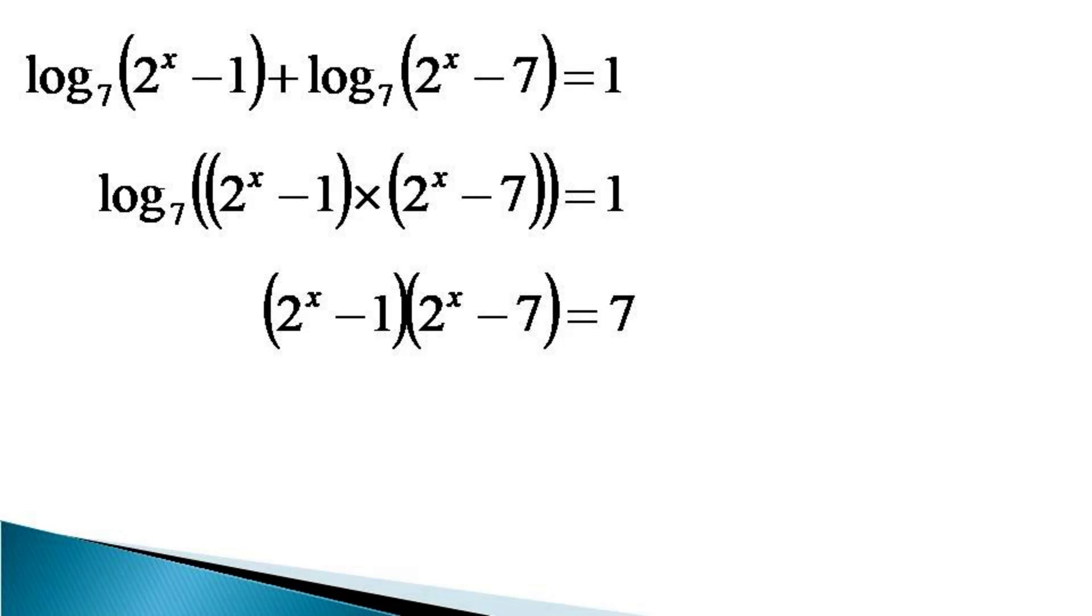And expanding the left hand side, we get the equation as 2^(2x) - 8 × 2^x + 7 is equal to 7. This simplifies to 2^(2x) - 8 × 2^x is equal to 0.